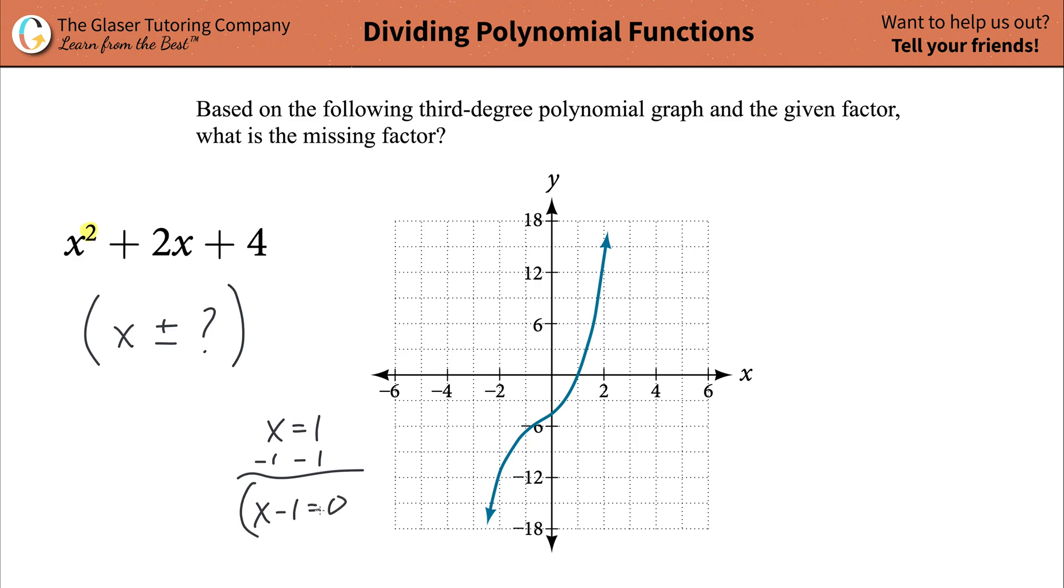And then you might begin to notice now, oh, there's the factor, right? So basically, the missing factor is going to be x minus one.